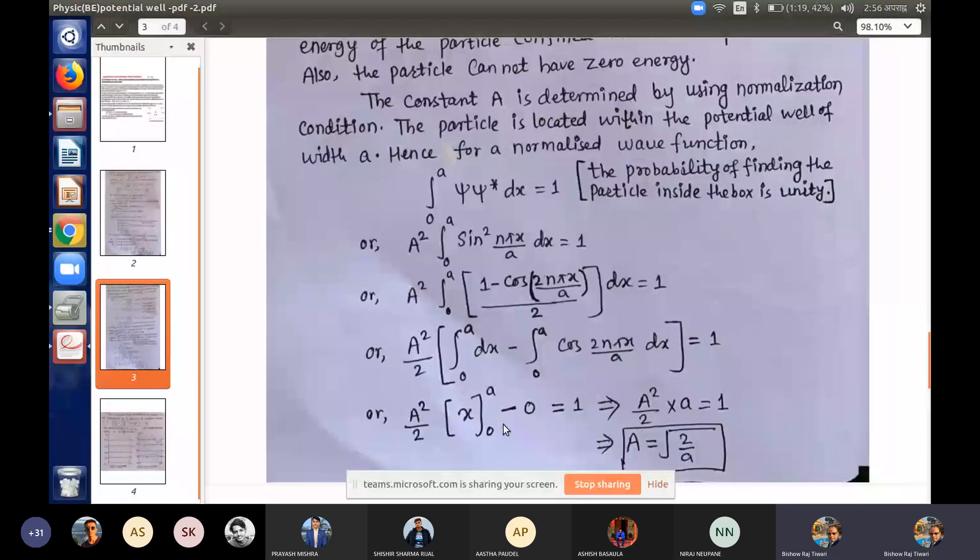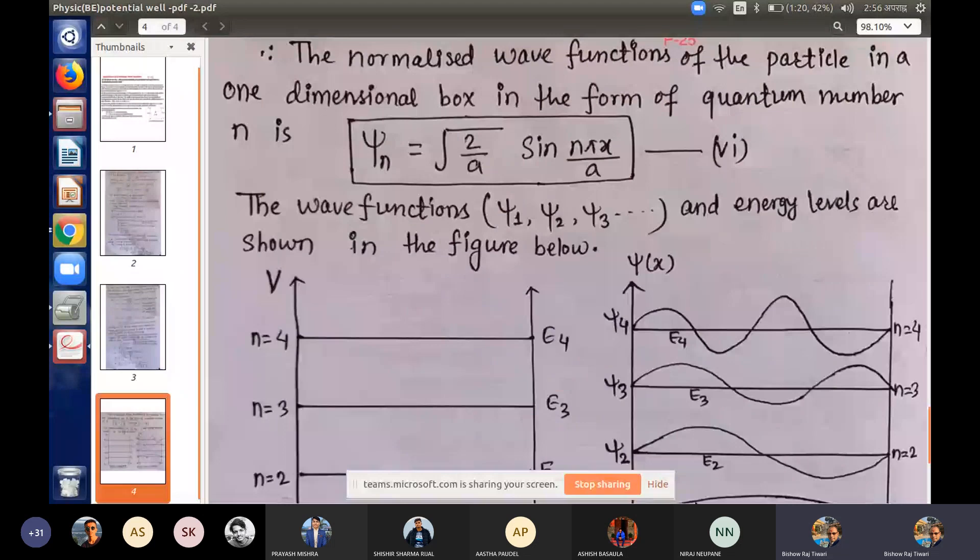So the value of A is root 2 upon A. So the thickness of A is root 2 upon A. So the final answer is the normalized wave function: psi equals root 2 upon A times sin n pi x upon A. That is the final answer.